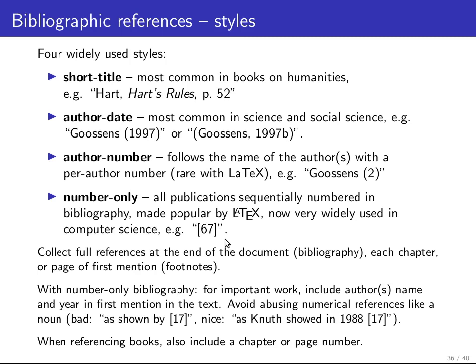However, there's a stylistic question. I personally find it quite bad style to use numeric references like a noun in a sentence. I would still like to know who is being referenced. So rather than writing something like 'as shown by [17]', which I think is not a very courteous reference to someone else's work, I would actually name the author — something like 'as Knuth showed in 1988' — and then use the reference number more like a footnote that indicates how you can find exactly which paper I'm talking about, while giving time and author information separately.